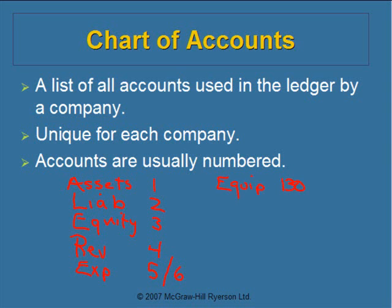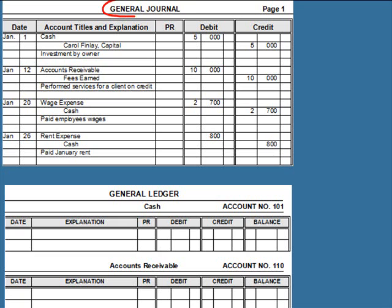As you recall from earlier sessions, the general journal is where we record all of the company's transactions by date. However, it does not give us all of the information we need to manage a company, so we need another place to put financial information. That other place is called the general ledger. The general ledger allows us to sort all journal entries by account — for example, how much cash is in the bank or how much we've paid employees so far this year.